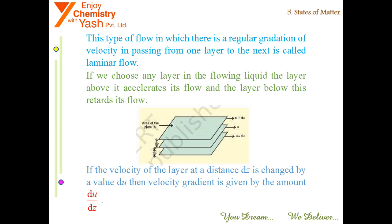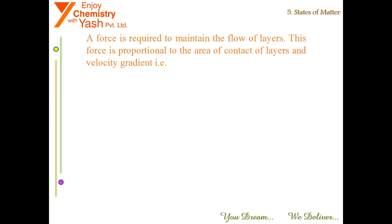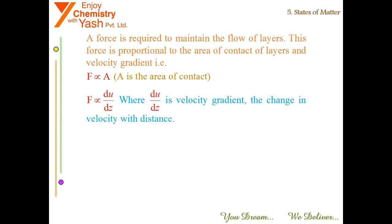If the velocity of the layer at a distance dz is changed by a velocity value du, then velocity gradient is given by du/dz. A force is required to maintain the flow of layers. This force is proportional to the area of contact of layers and velocity gradient, that is F is proportional to A where A is the area of contact, and F is proportional to du/dz where du/dz is velocity gradient, the change in velocity with distance.